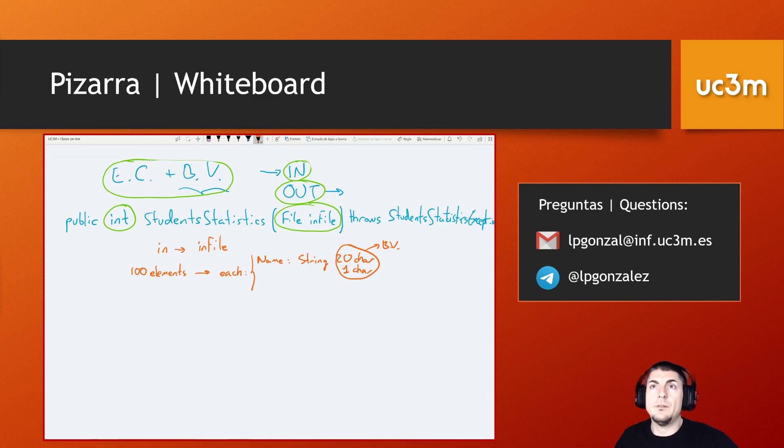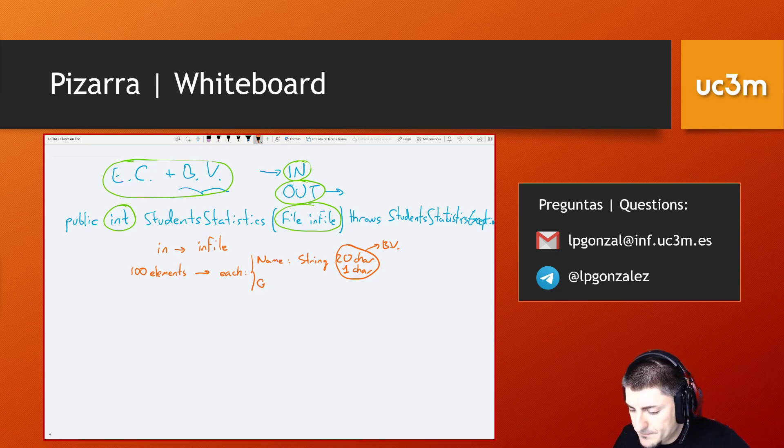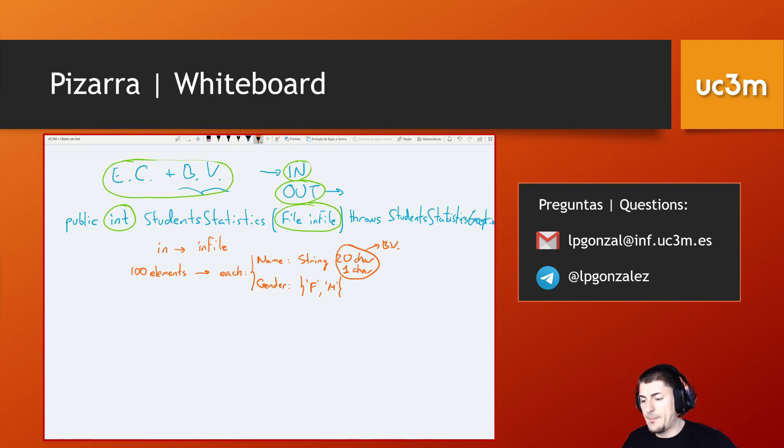Then we have something else: we have the gender, and this is a set where we can have female or male. And finally we have a list of scores.